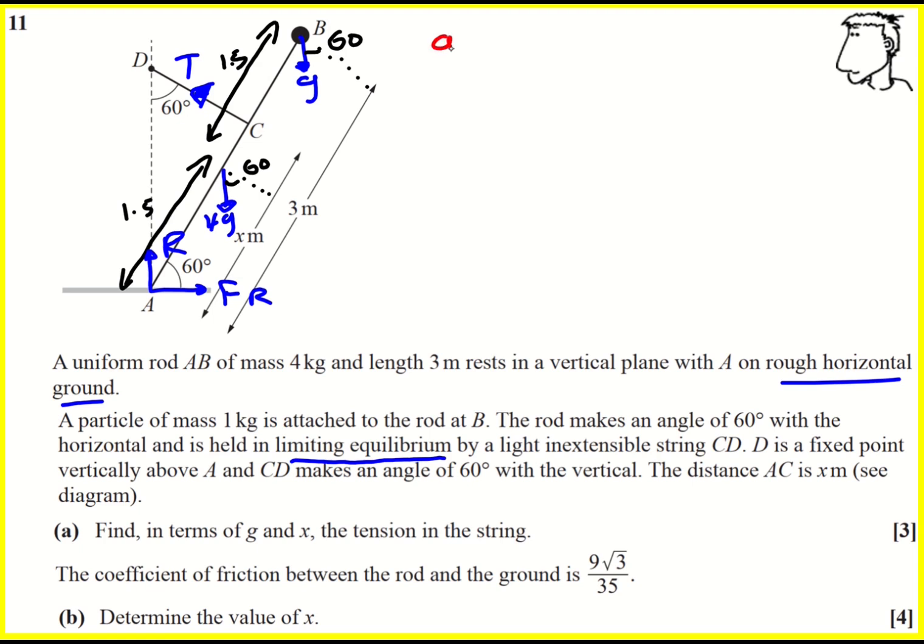There's a lot of forces going on, but one way to very quickly remove most of them is to take moments. Because moments are all about force times distance, and if you make the distance zero, you just ignore the force to take moments about A, because then I eliminate R and F_R, and I'm left with 4G and G, which I know their sizes, and I can write down, therefore, T.